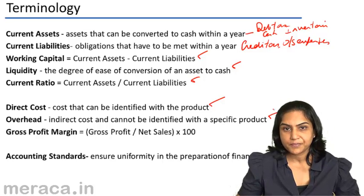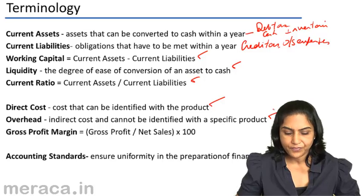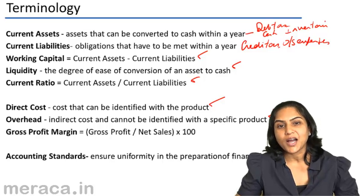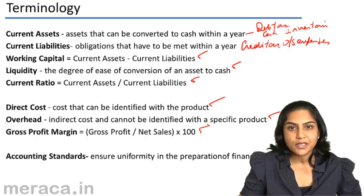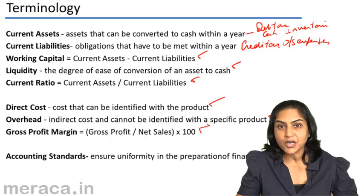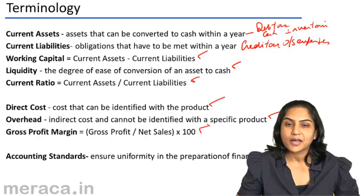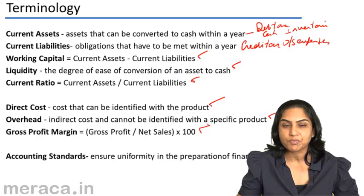Gross profit margin is gross profit divided by sales, expressed as a percentage. This is an important ratio that measures the profitability of a company, and the GP ratio is often compared with other companies in the same industry. A gross profit ratio of 25% would indicate a profit of 25 on sales of 100. A company having a GP margin of 30% would mean it has made a profit of 30 rupees on sales of 100 rupees. Therefore, higher the gross profit margin, greater the profitability of a business.